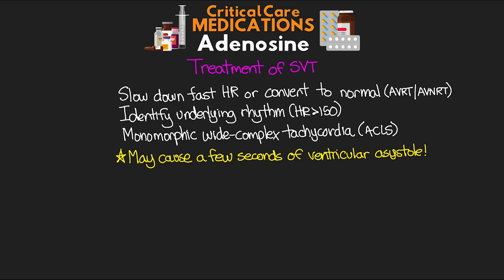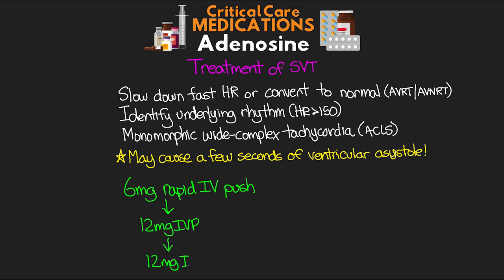Our initial dose for treating SVT is 6 milligrams given as a rapid IV push. Because of that extremely short half-life, I recommend using a three-way stopcock with both the adenosine syringe and a 10 mL flush attached — push the adenosine fast and immediately follow with the flush to deliver all medication as quickly as possible. If the 6 mg dose doesn't convert the rhythm, follow up with 12 mg IV push, and that 12 mg dose can be repeated one more time. Important: never give a dose larger than 12 mg.